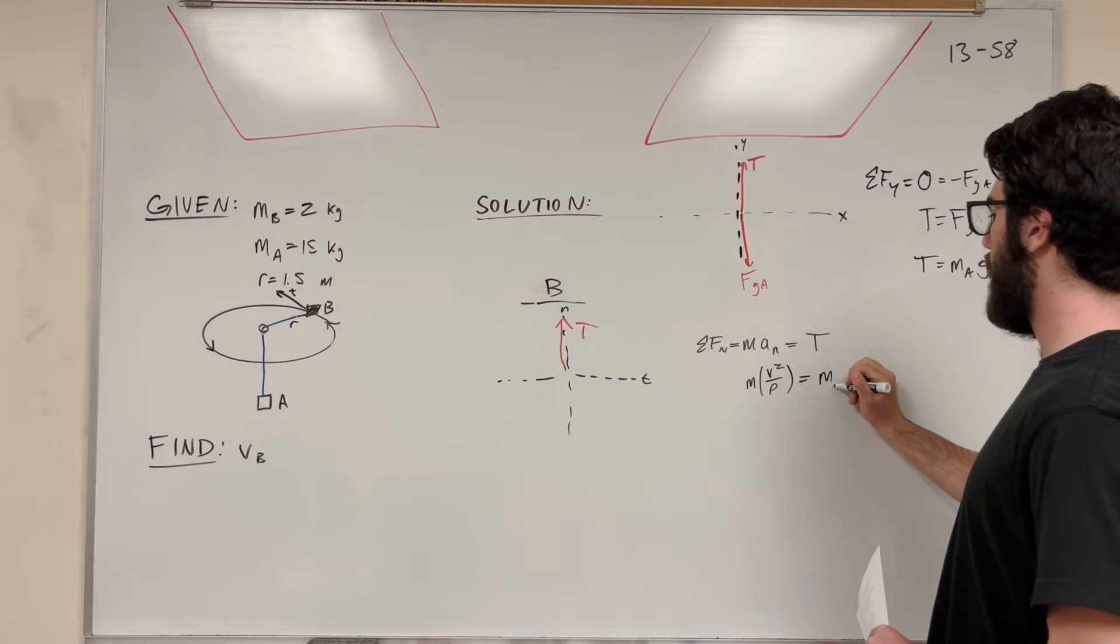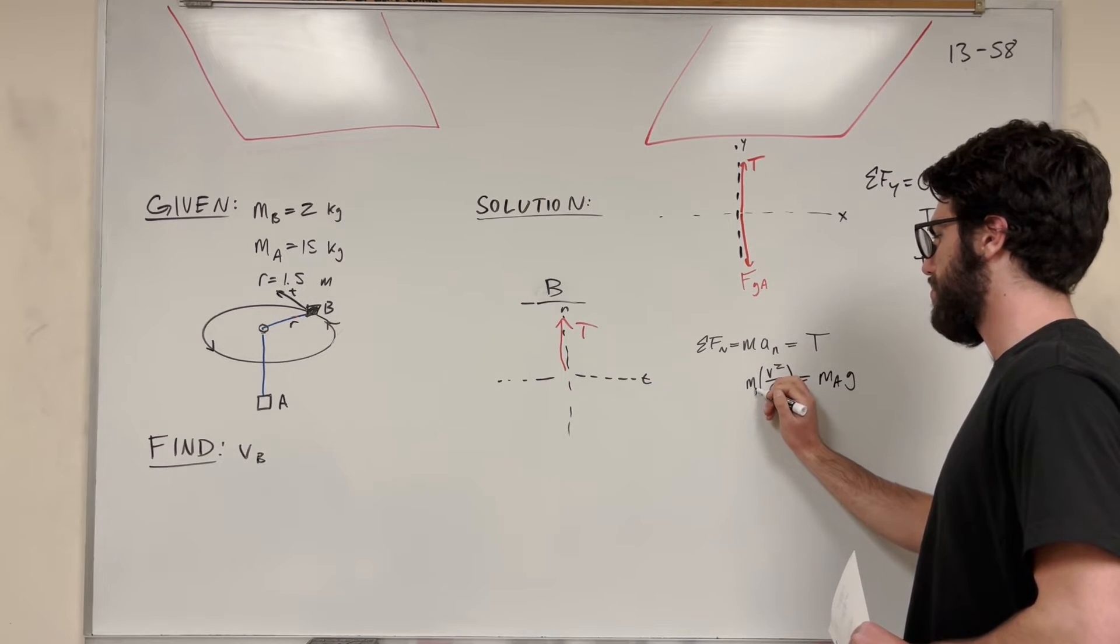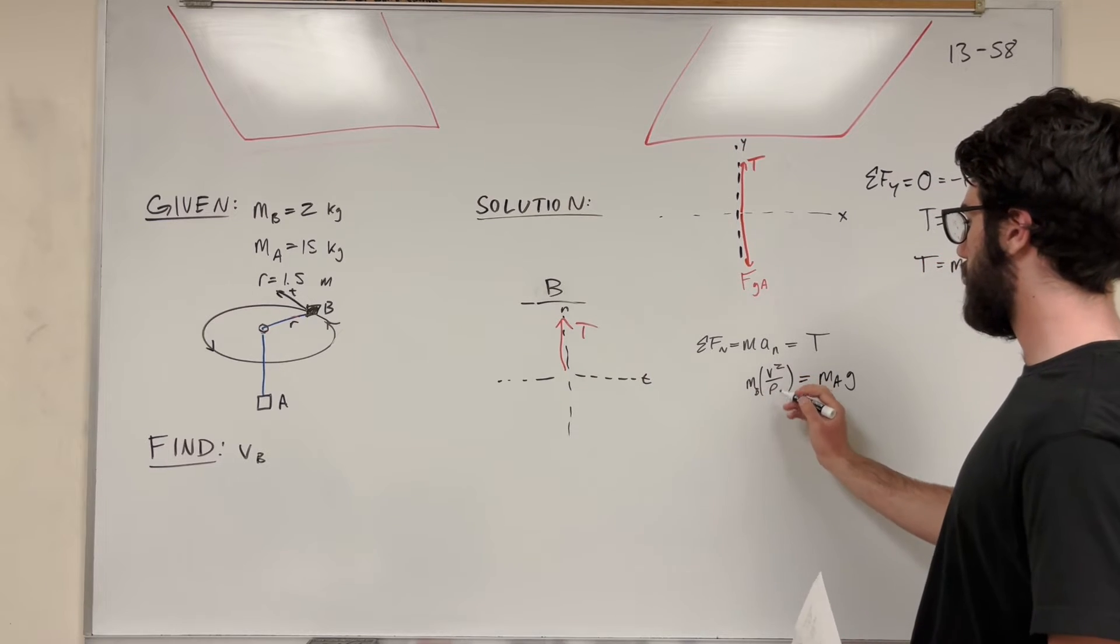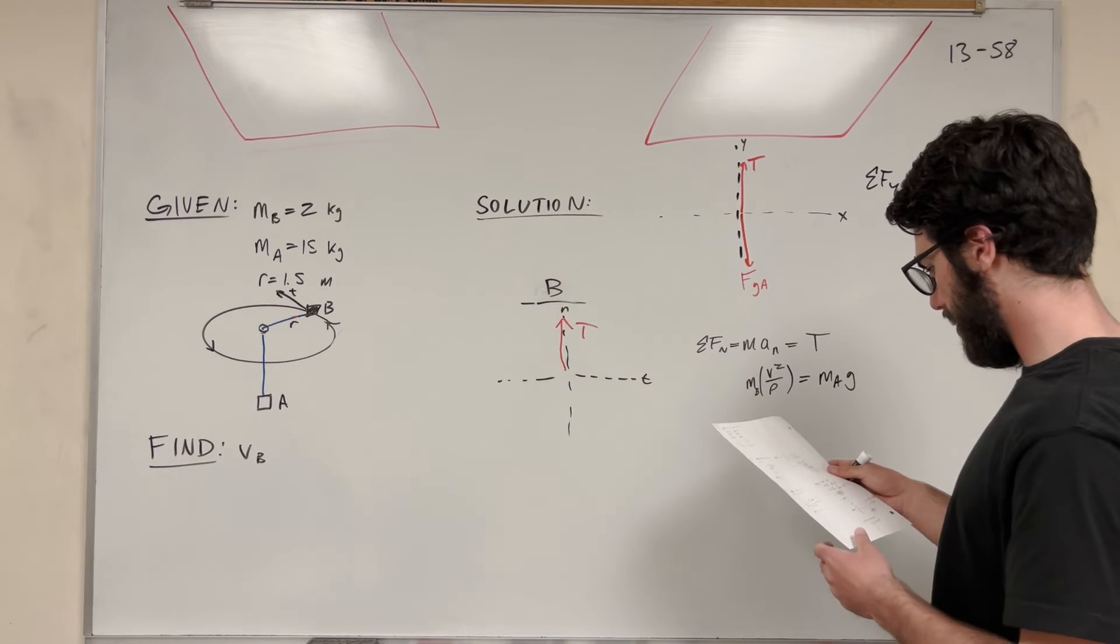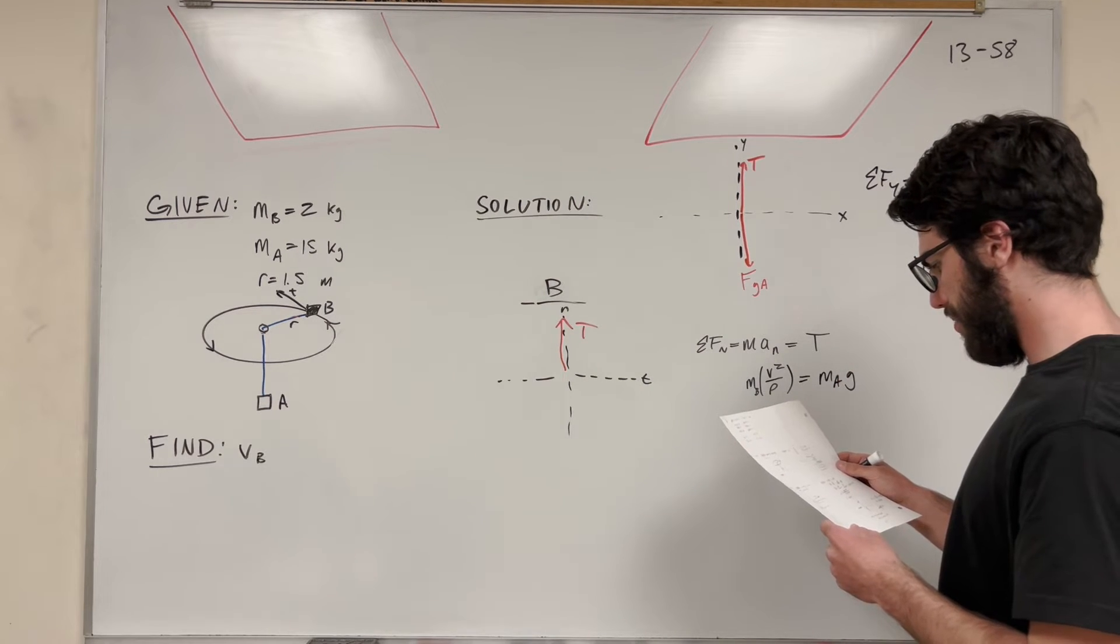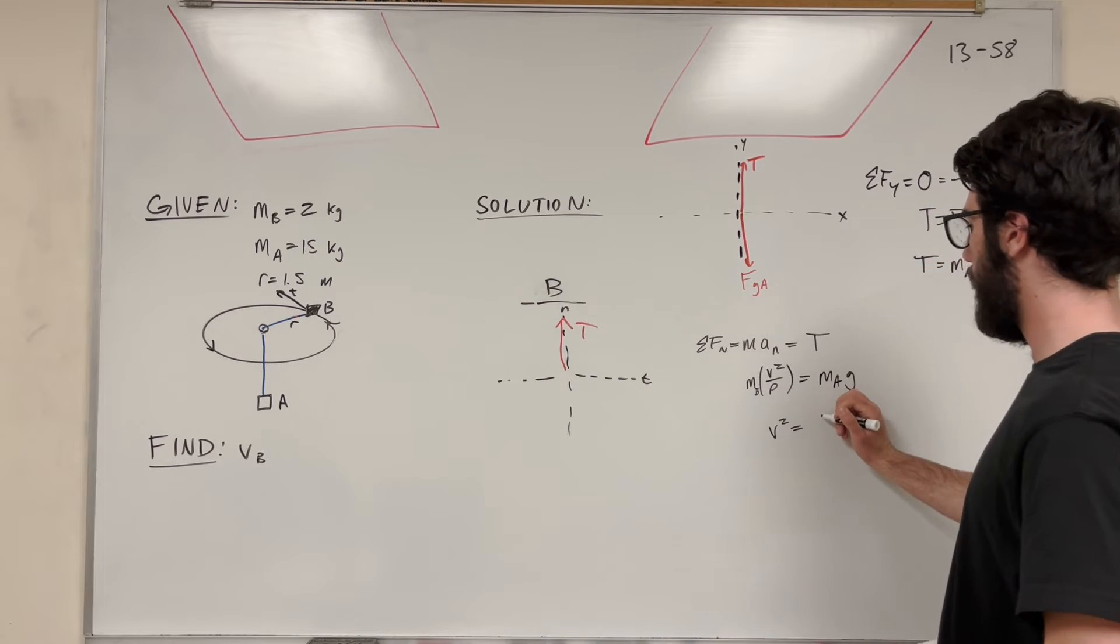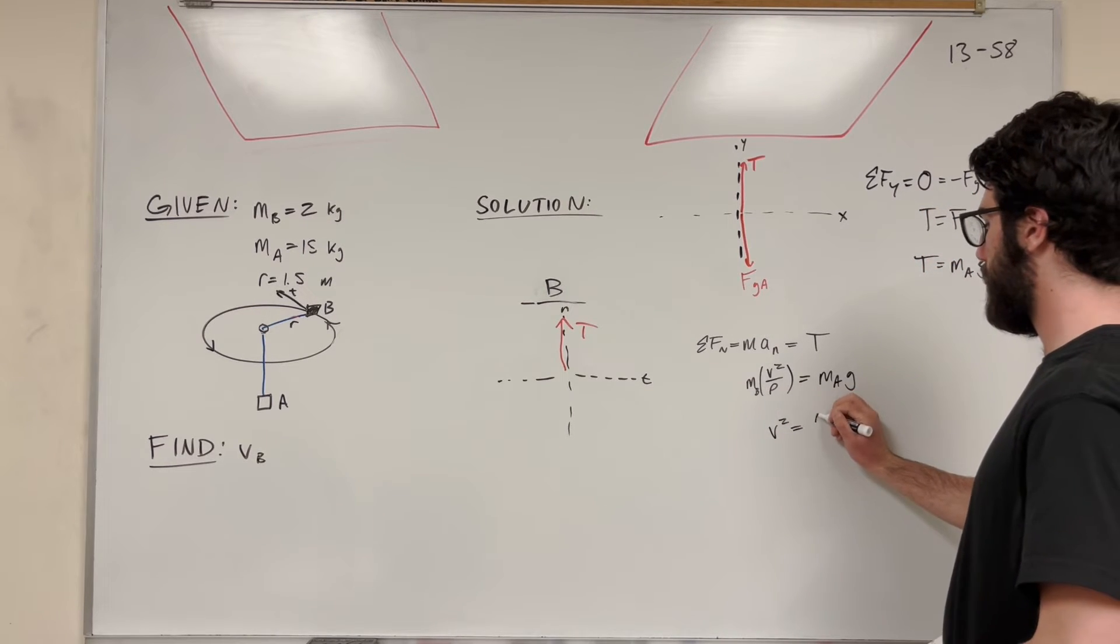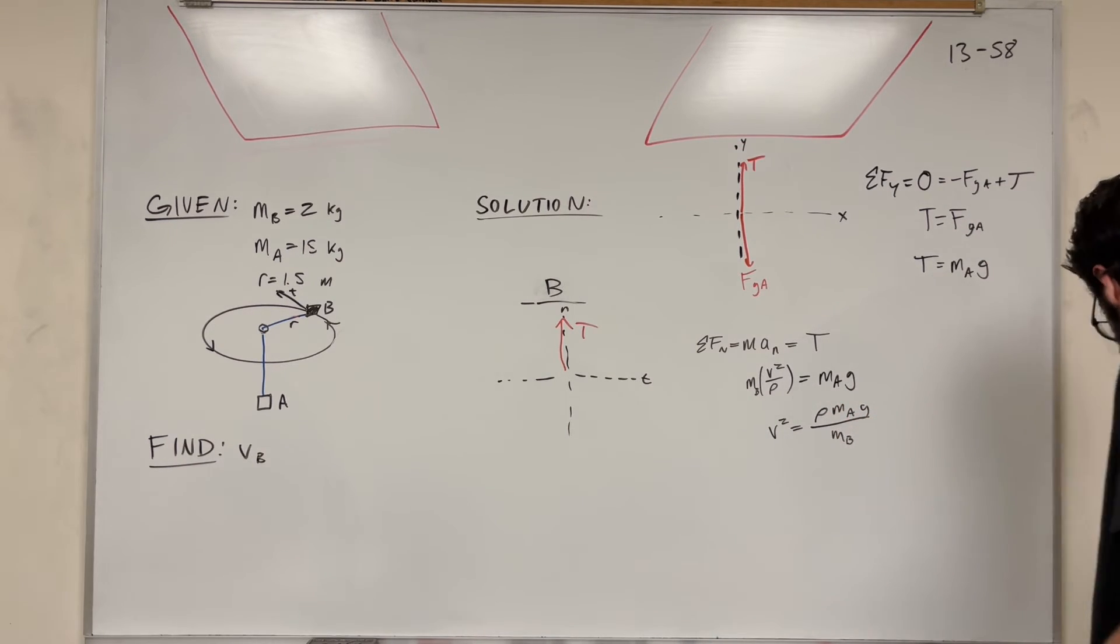So then tension is equal to mass of A times gravity. I need to specify that this is mass of B. So then if we're going to solve for velocity, let's just divide by mass of B. Velocity squared, let's just divide by B, multiply by radius of curvature divided by mass of B. And of course, we're going to take the square root in order to find velocity.